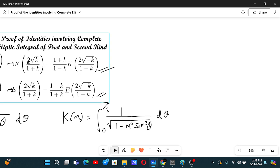In the first one, we have to prove that K of this value is equal to this thing, then K of this value. Let's begin with the left hand side, K of 2 root k by 1 plus k.